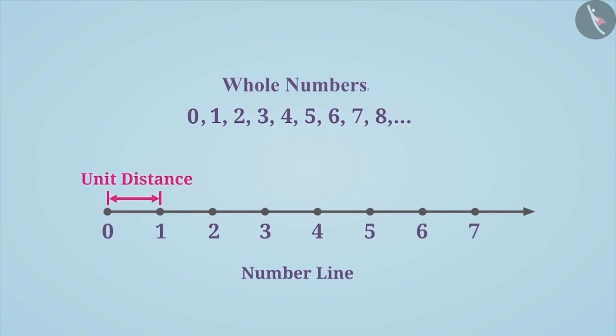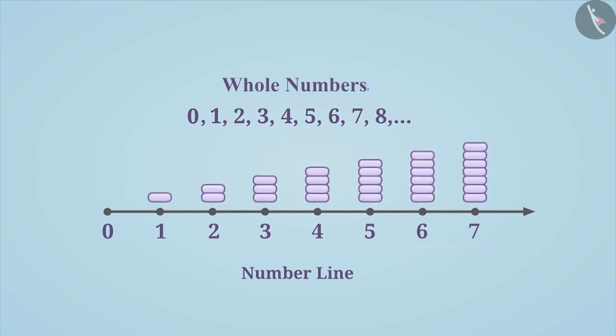Generally, the number line is represented horizontally. On the number line, the value of number increases from left to right. Similarly, the value of number decreases from right to left. With this understanding, numbers can be compared very easily on the number line.